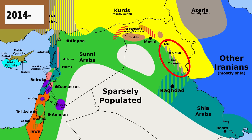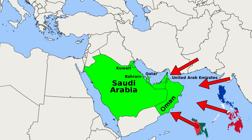The third largest group in Iraq are the Iraqi Turkmen, who represent less than 10% of the population and speak a dialect of Turkish. In the Gulf states, there are many migrant workers from foreign countries like India, Pakistan, Bangladesh, and the Philippines, who are not citizens and thus have limited rights, but can sometimes be the majority of the population.